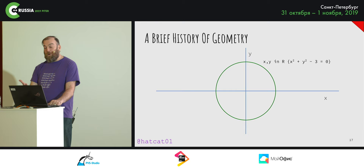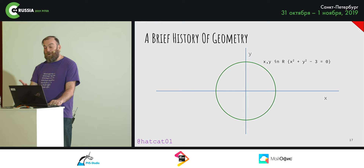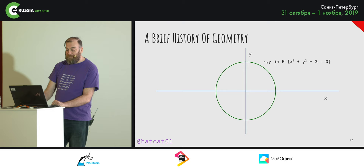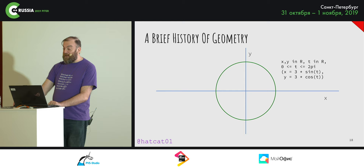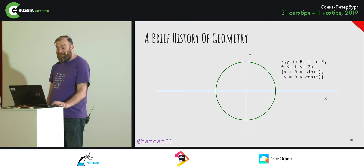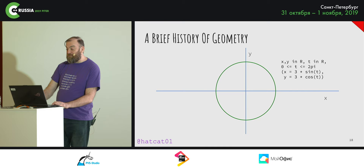A circle is the set of points (x, y) in ℝ such that x² + y² − 3 = 0. This doesn't rearrange to a simple equation, but we can establish the points parametrically. We introduce a third value t ranging from 0 to 2π, describing the circle as the set of points where x = 3 sin(t) and y = 3 cos(t).